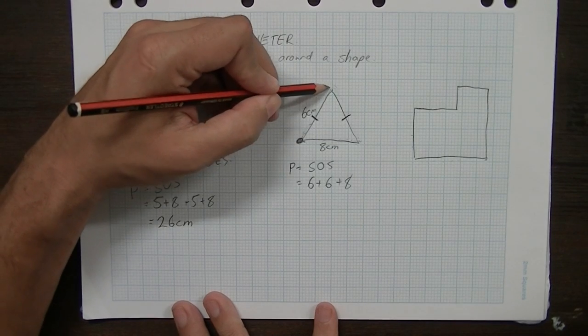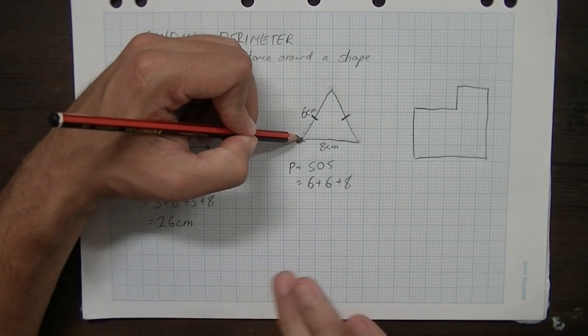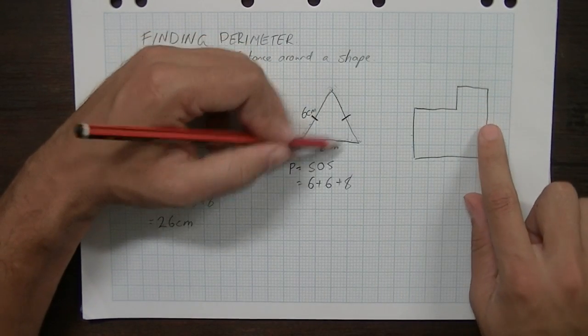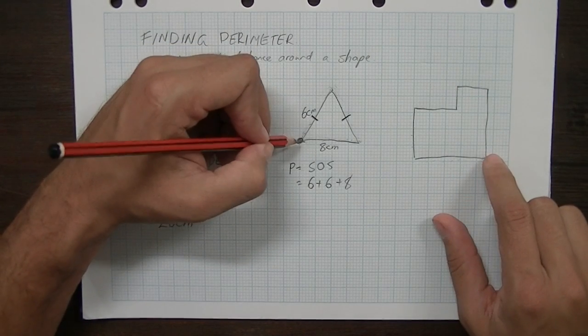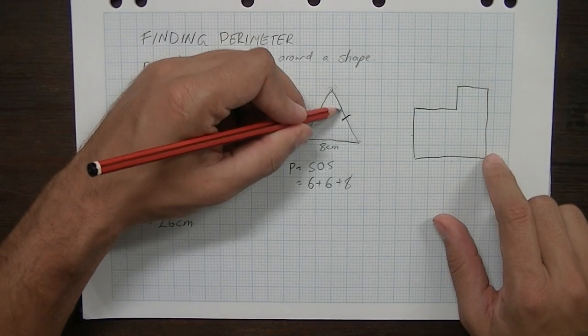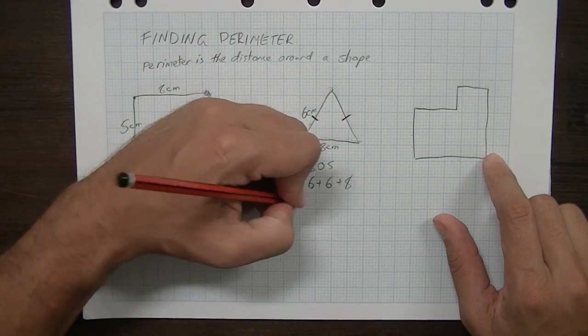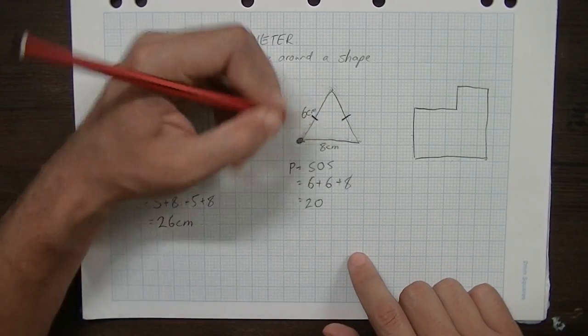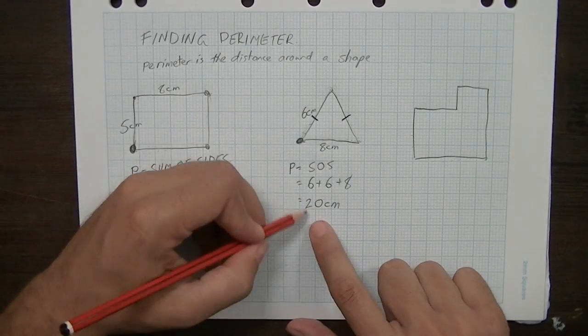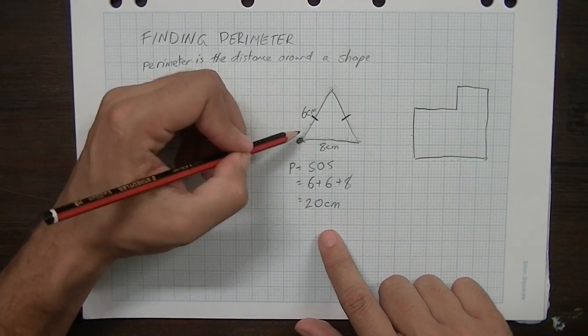You'll notice that I walk around this shape. This is so that when the shapes get more complicated, I don't miss any sides. So make sure you spend your time walking around the shape 6 plus 6 plus 8. That'll come to 20cm. So again, the perimeter of that shape is 20cm.